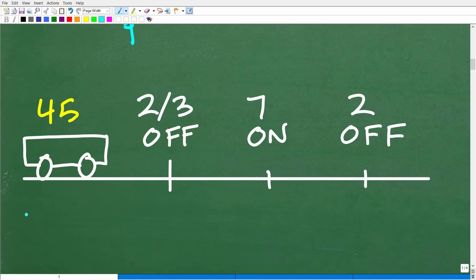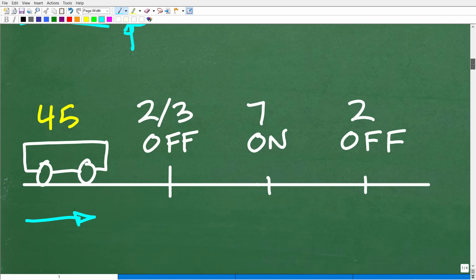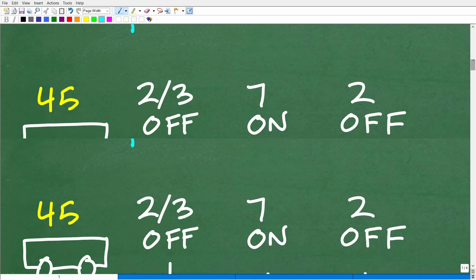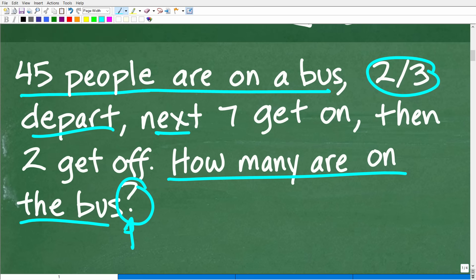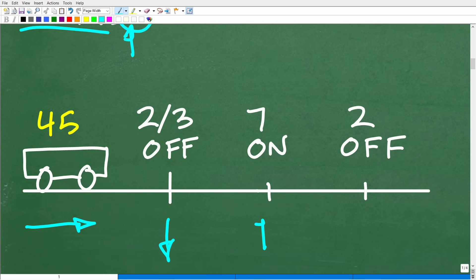And this is how I kind of think about it. So we have this bus going down the road here and it has 45 people on it, right? So that's what the problem says. We've got 45 people that are on a bus. That's the starting point. So then two-thirds of those folks depart. Okay, so here's our bus, has 45 people. Two-thirds of these people are going to get off the bus.